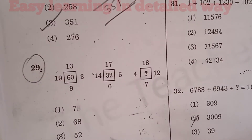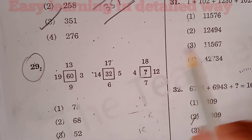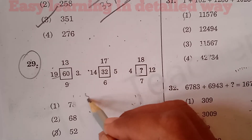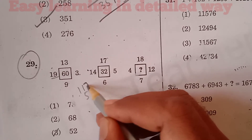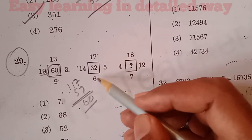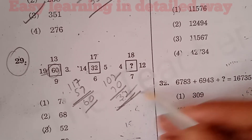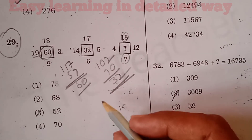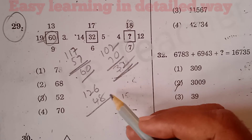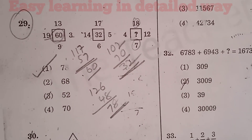Question number 29: We have 19, 13, 3, 9 with middle number; 14, 17, 5, 6 with middle 32; and 18, 12, 7, 4 with question mark. The pattern is cross multiplication difference: 19 into 3 is 57, 13 into 9 is 117, difference is 60. Similarly, 17 into 6 is 102, 14 into 5 is 70, difference is 32. In the same way, 18 into 7 is 126, 12 into 4 is 48, difference is 78. Option 1 is the right answer for question 29.